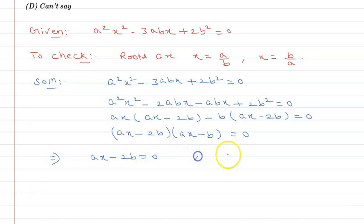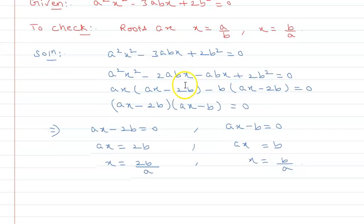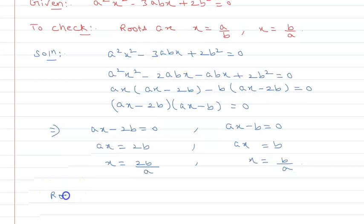Then ax will be equal to 2b, so x will be equal to 2b/a. Or ax = b, so x will be equal to b/a. So roots are x = 2b/a and x = b/a.